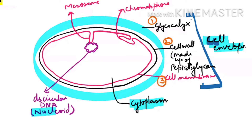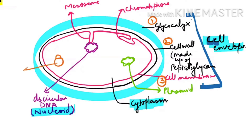We use the word nucleoid, not nucleus — it means nucleus-like but it is not a true nucleus. Apart from the nucleoid, bacteria also have an additional structure called a plasmid, which is extra, autonomously self-replicating genetic material. Bacteria have no membrane-bound organelles; the only organelle present is the ribosome, which is membraneless.